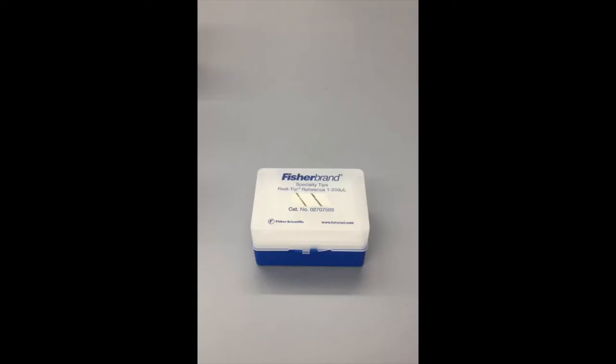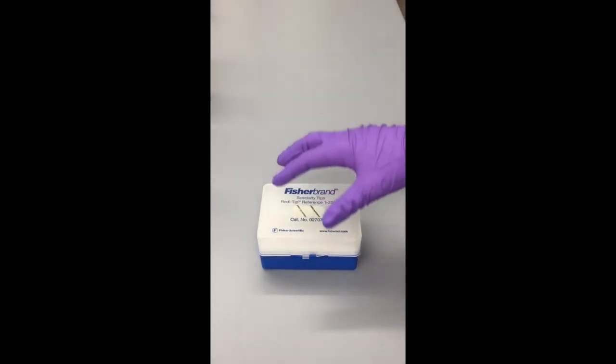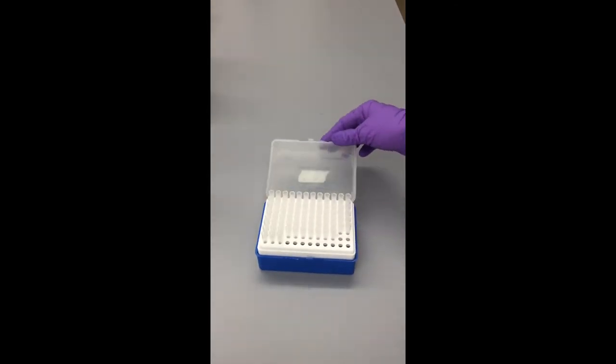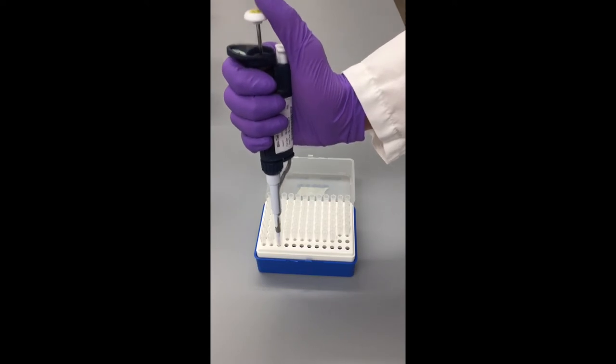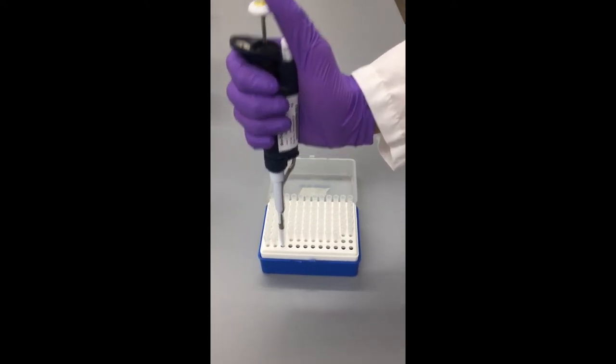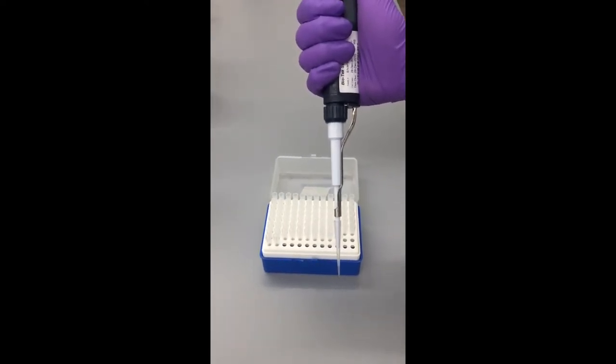This is a micropipet tip box. It contains several tips. Depending on the size of the micropipet you are using, the size of the tips you will need will vary. To attach the tip to the micropipet, simply open the box, stick the micropipet into one of the tips and apply some pressure. Tap the micropipet against the box a few times to ensure that the tip is securely attached.